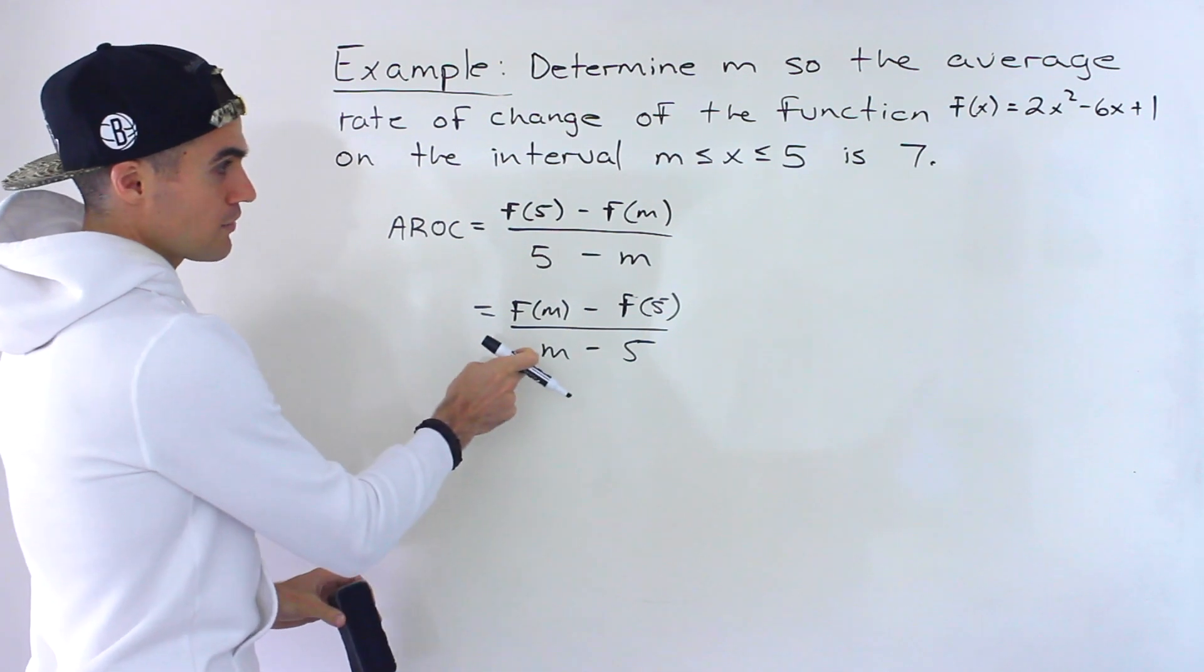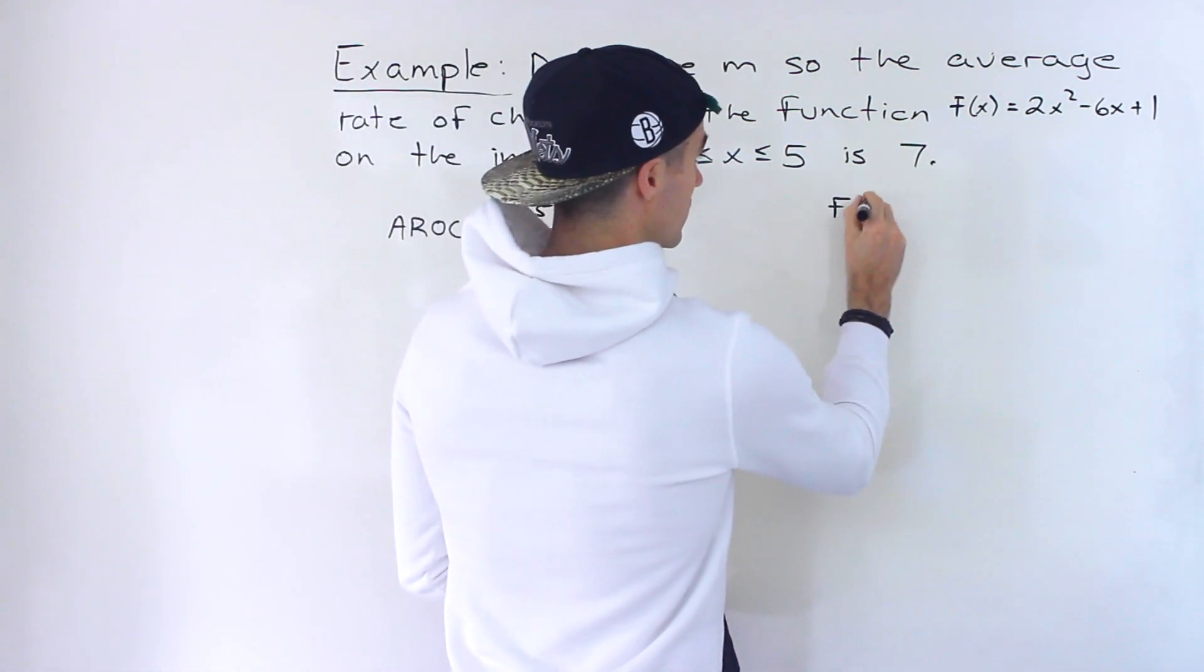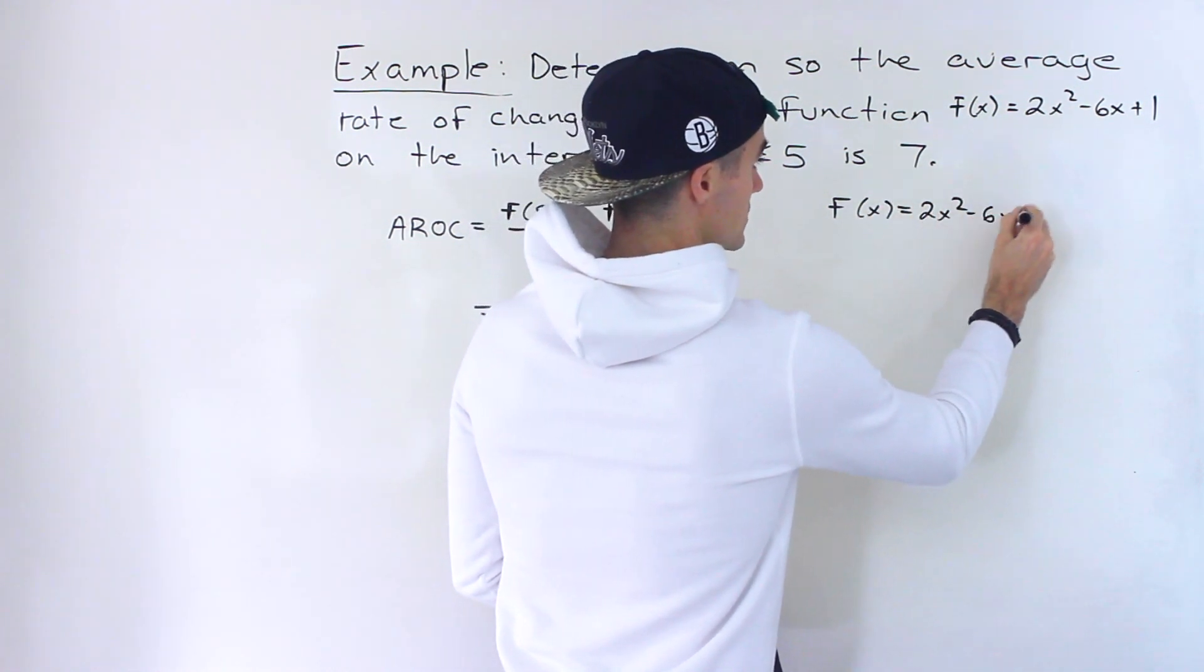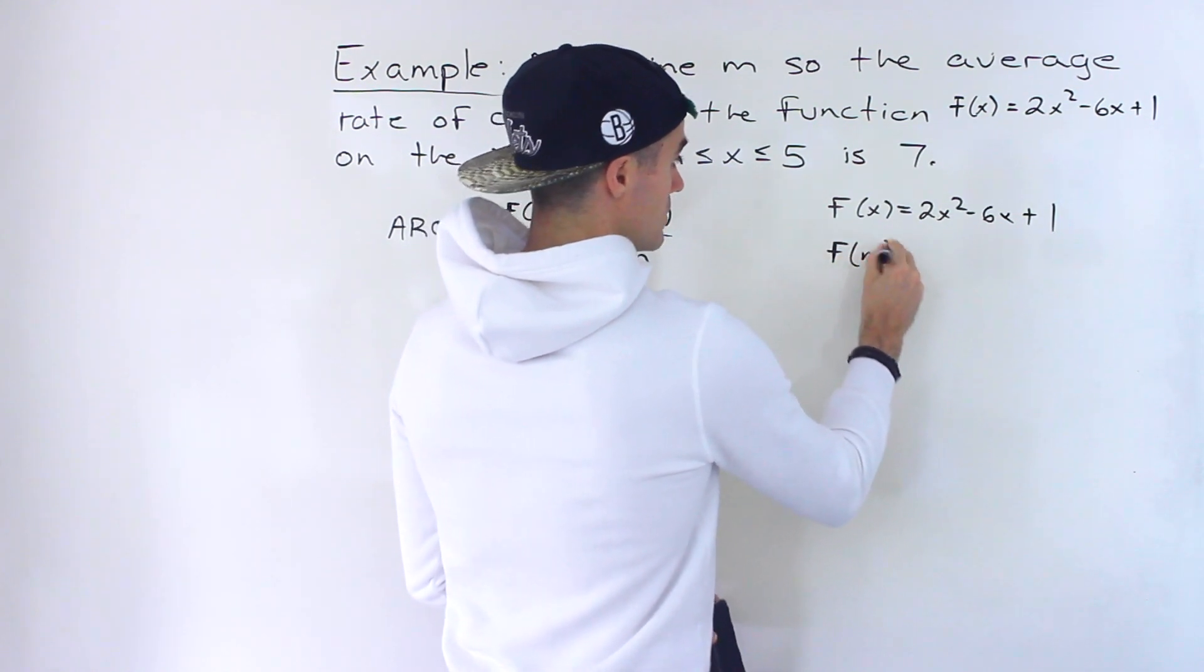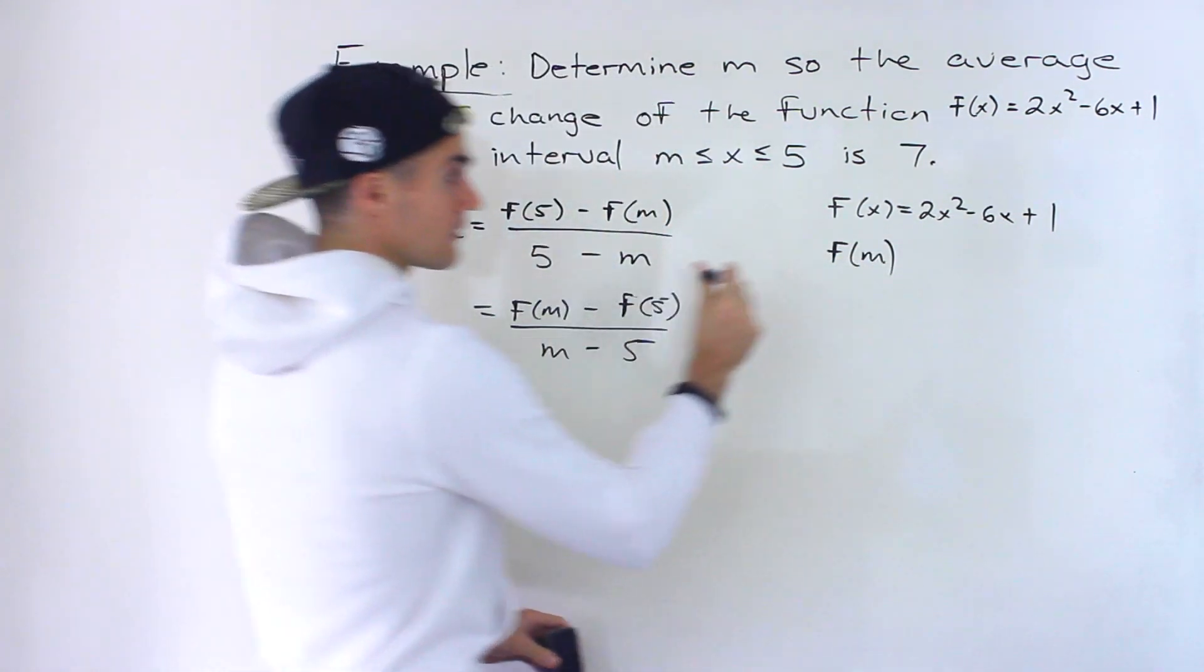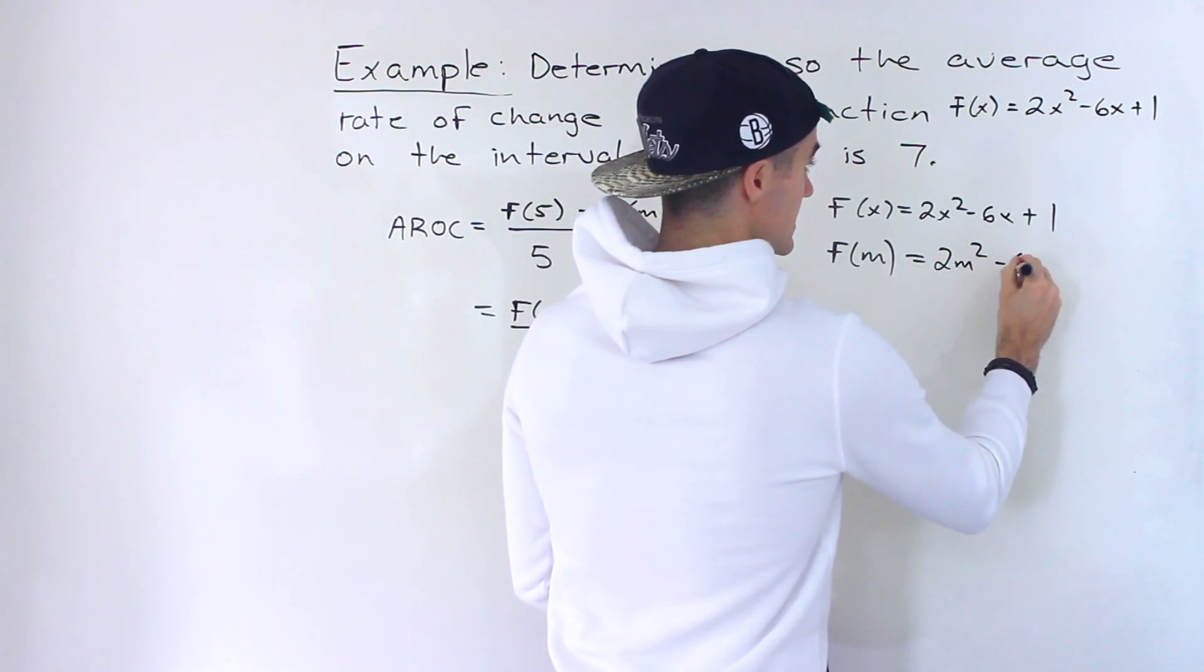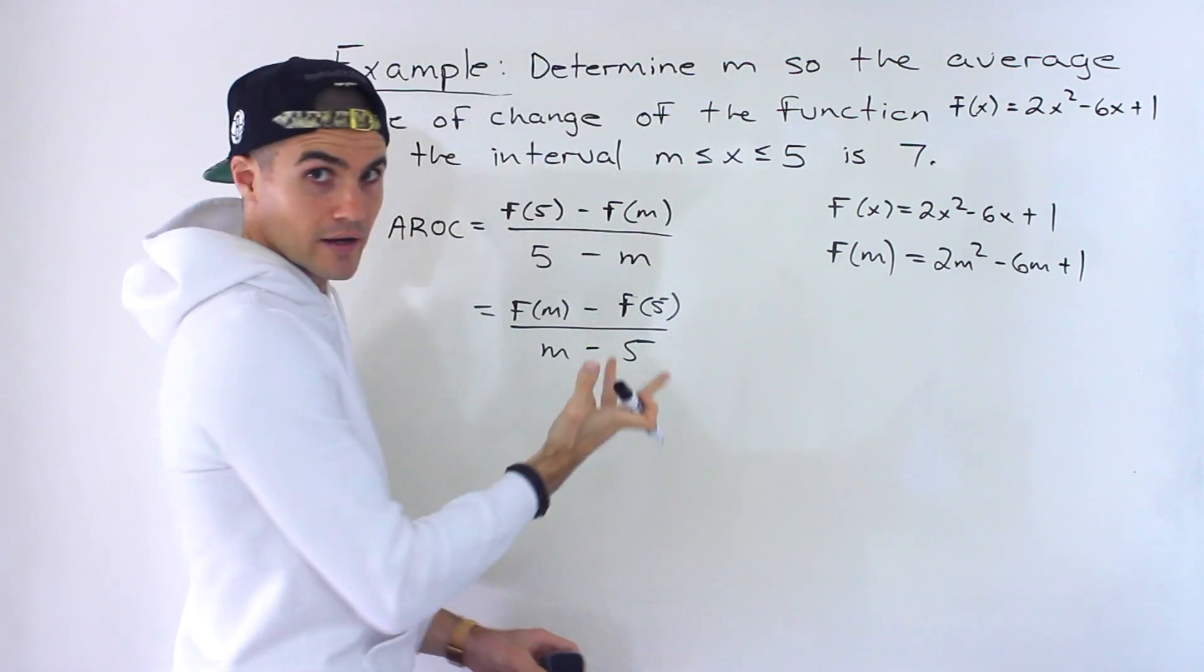And I'm actually probably going to work with this order because notice if on the side, notice how we have f(x) = 2x² - 6x + 1. So if we get an expression for f(m), which we're going to have to plug in here, we would have 2m² - 6m + 1.